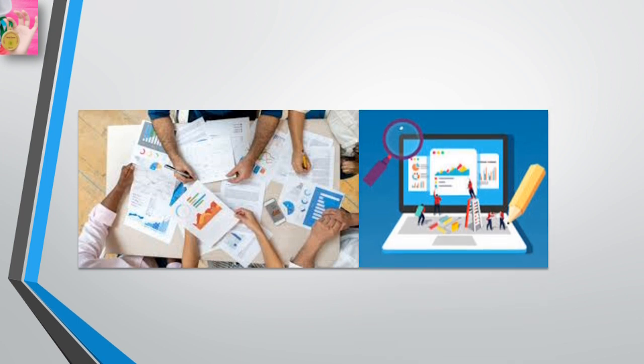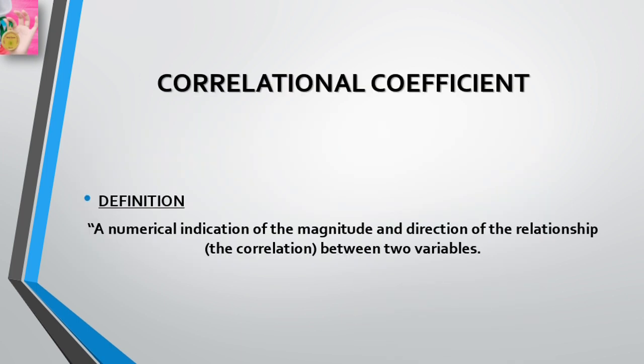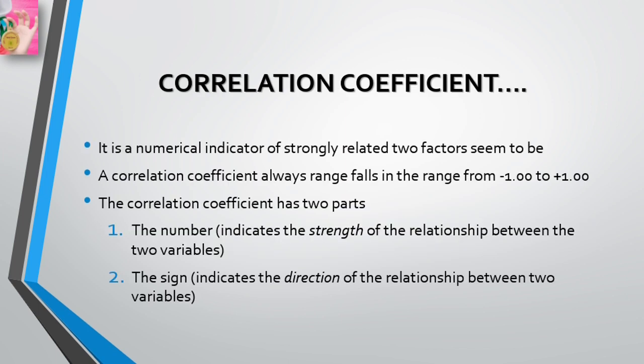With these data in hand, we could use statistical procedures to calculate a correlation coefficient. A correlation coefficient is a numerical indication of the magnitude and direction of the relationship between two variables. A correlation coefficient always falls in the range from -1.00 to +1.00. It has two parts: the number, which indicates the strength of the relationship, and the sign, which indicates the direction of the relationship between the two variables.